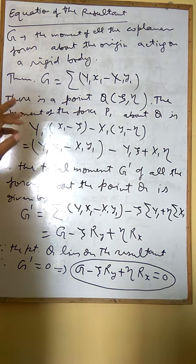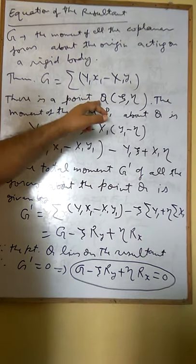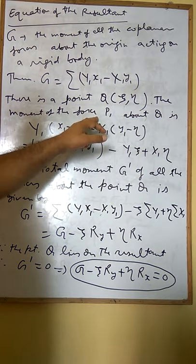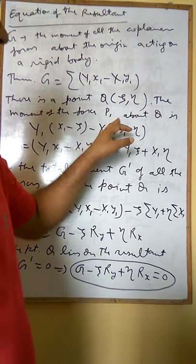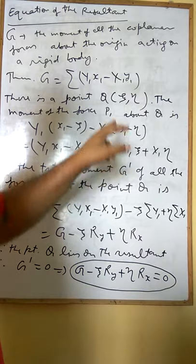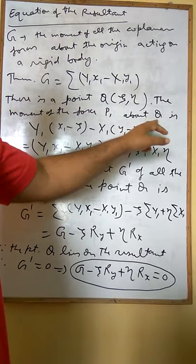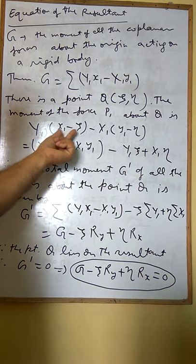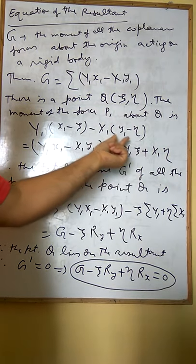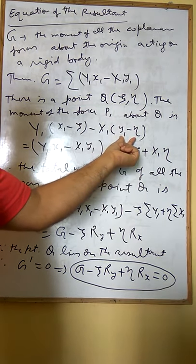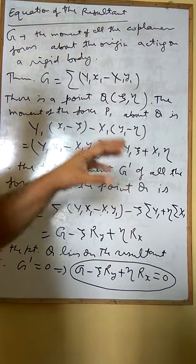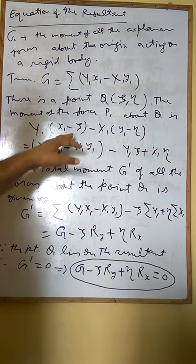Suppose we have a point Q(ξ, η). The moment of the force P₁, whose resultant part is x₁ and y₁, about point Q is given as y₁(x₁ - ξ) - x₁(y₁ - η). Since (ξ, η) is a point, this equals y₁x₁ - x₁y₁ - y₁ξ + x₁η.